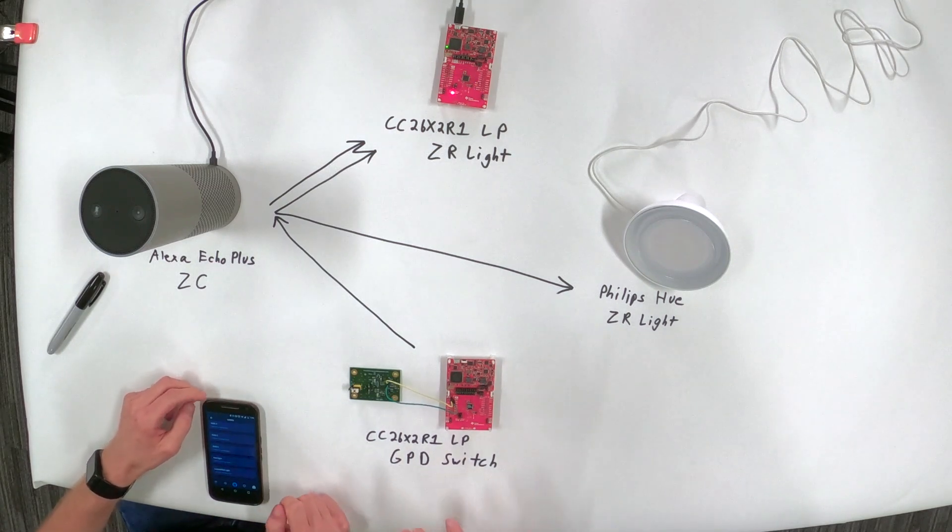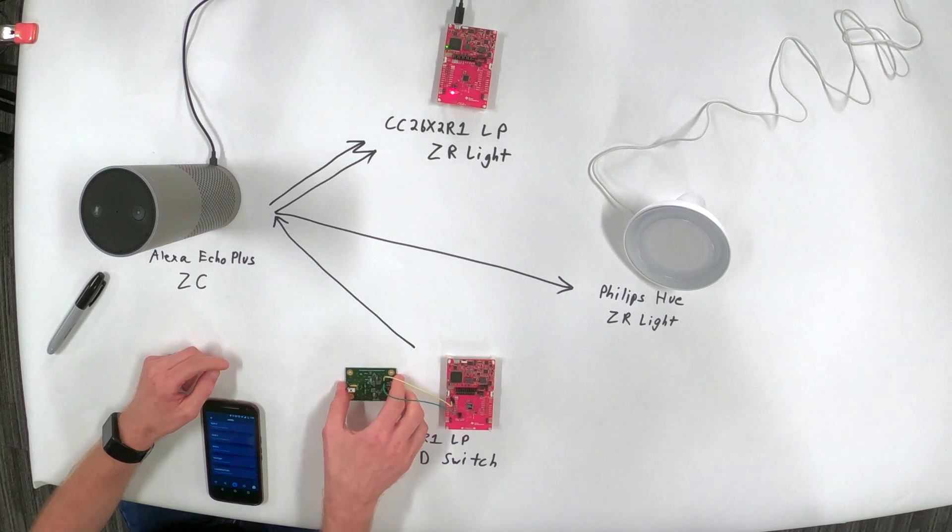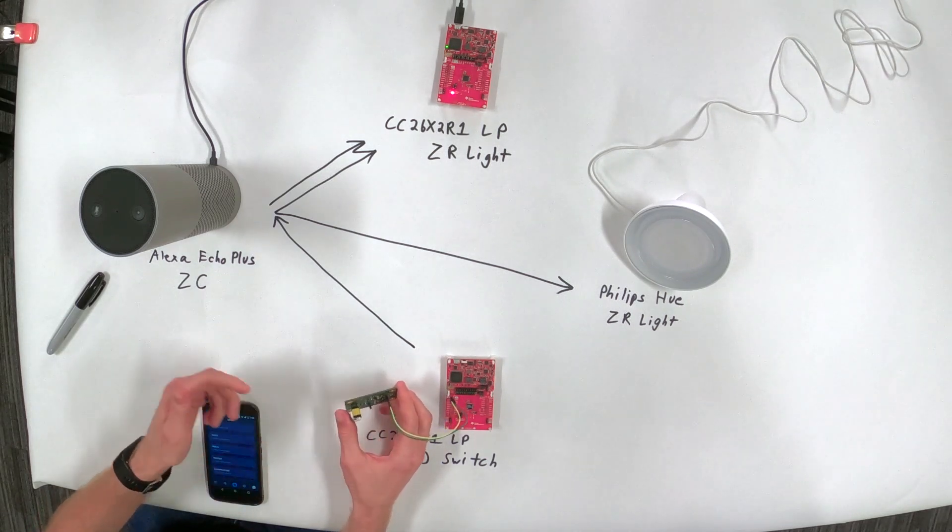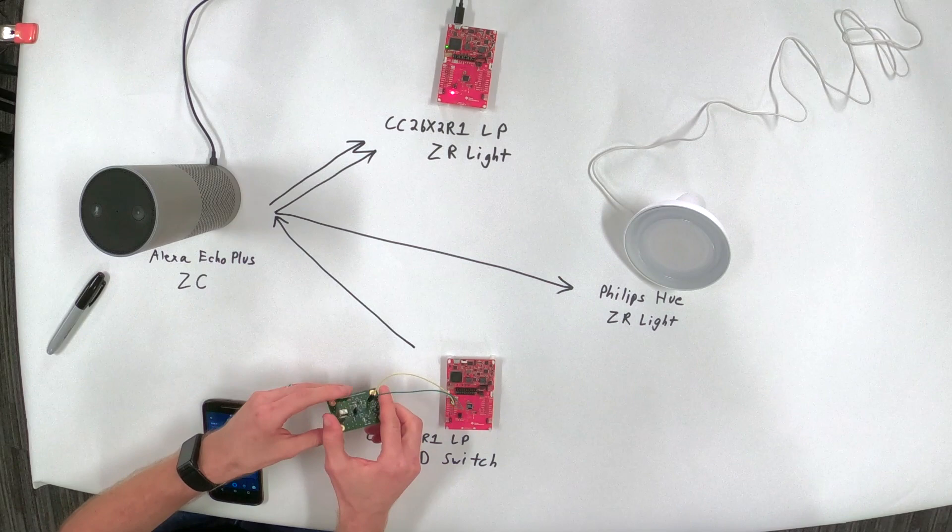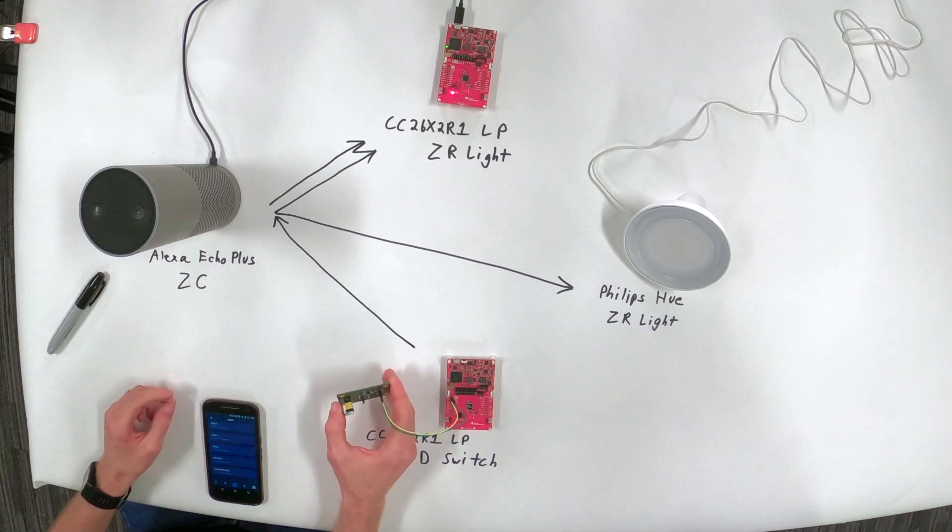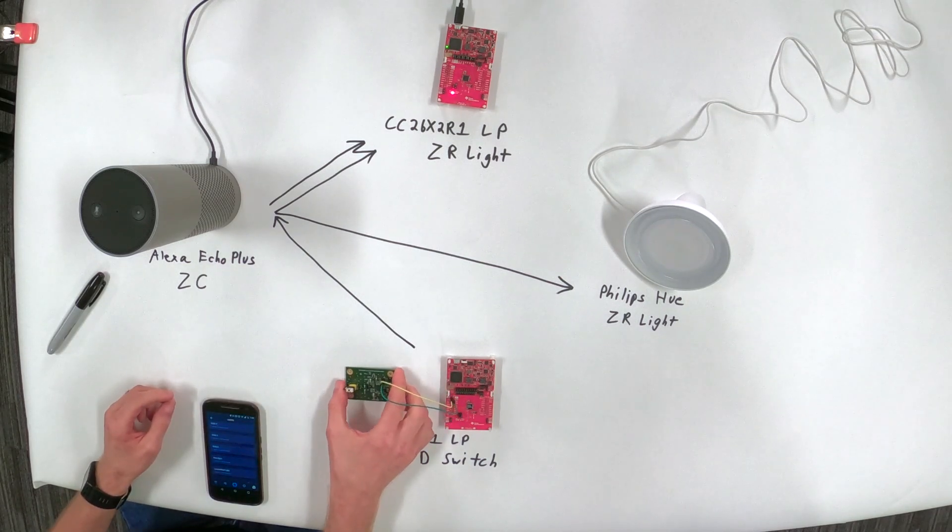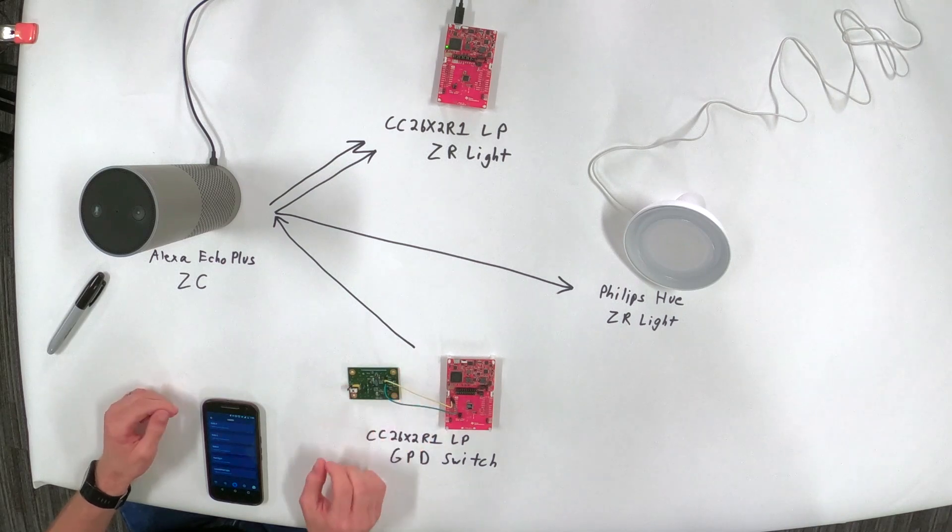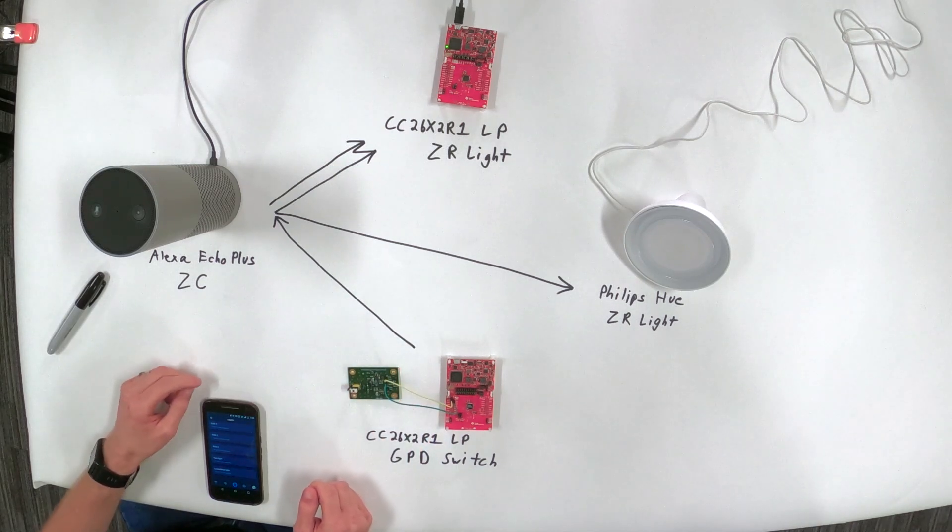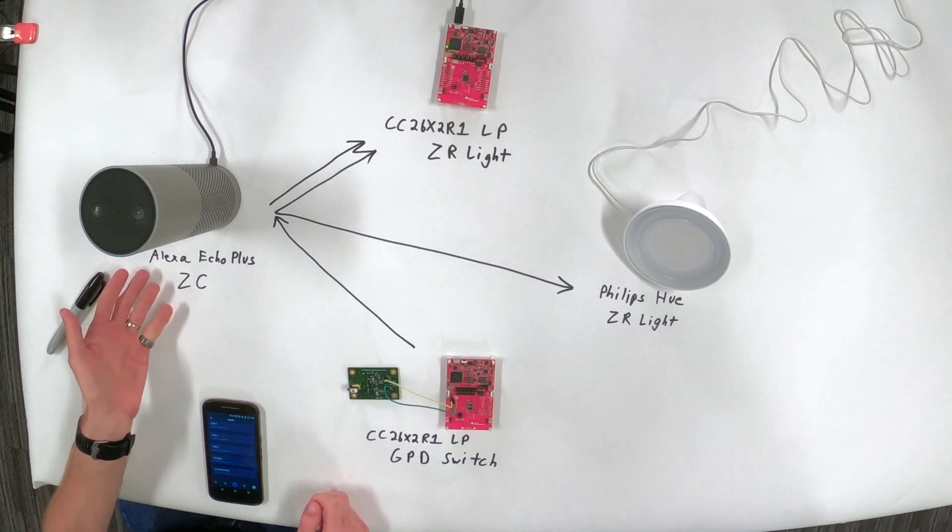So is it harvesting energy from the actual switch motion? Correct. It is harvesting the power from this switch here. So you can see it's a pretty heavy switch, but the mechanical action of pressing that switch is able to turn the light on and off. Very cool. As we just demonstrated.